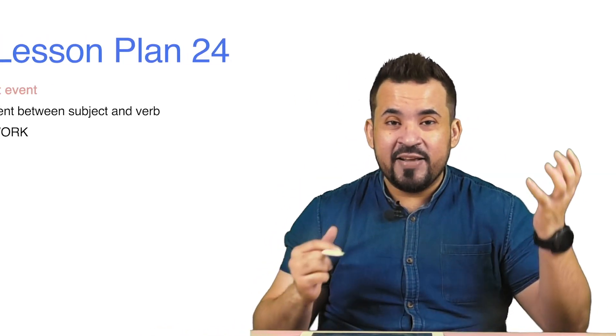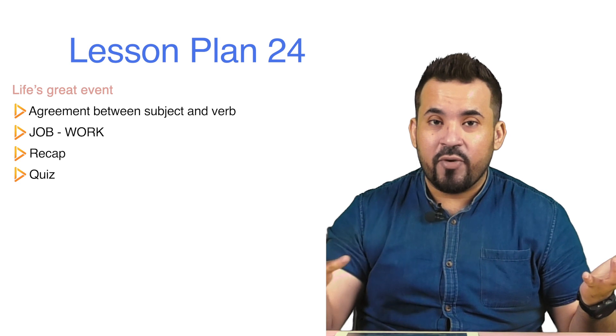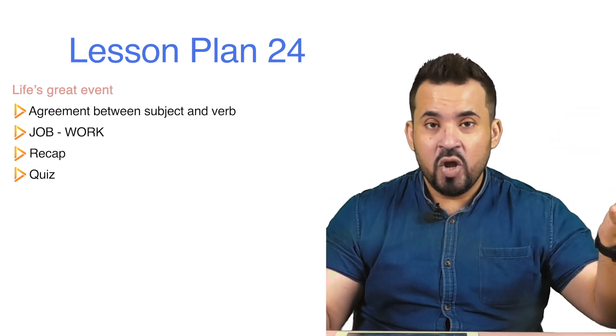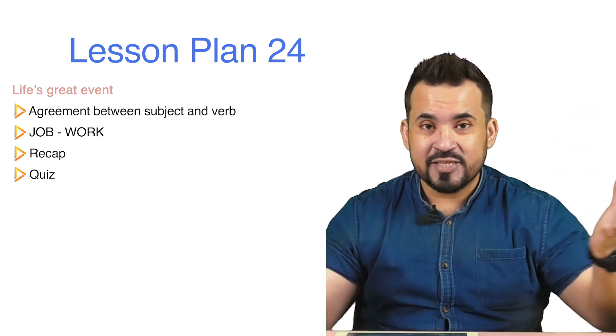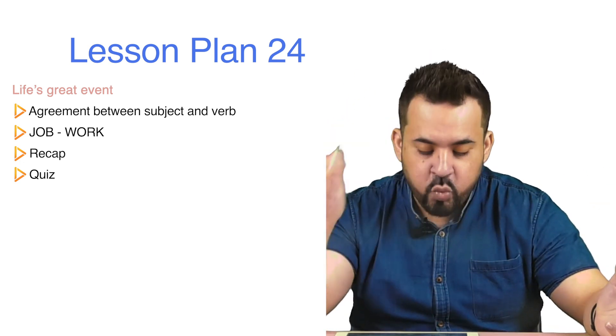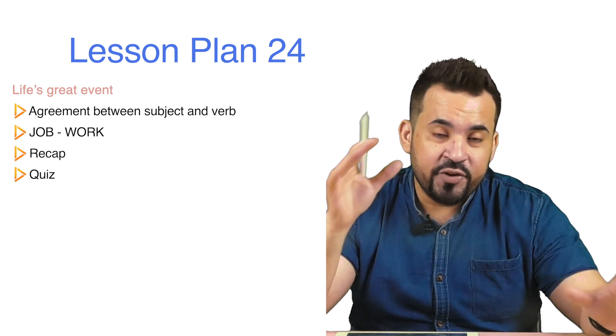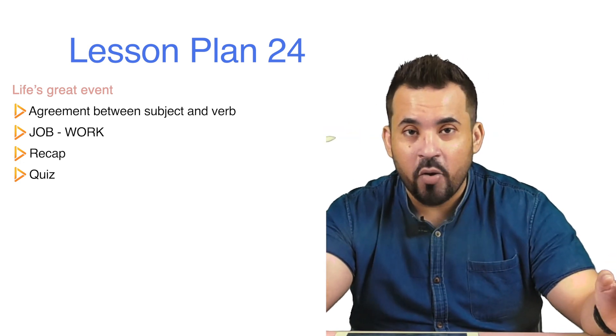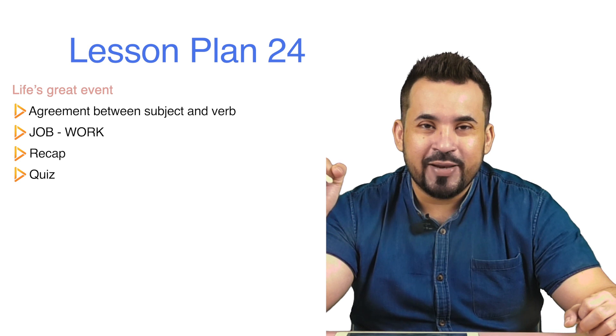Welcome to lesson 24. Today we will talk about something very crucial in grammar: subject and verb agreement, and how the verb must agree with the subject. After that, we will take a look at 'work' and 'job,' the difference between both, and expressions using both. So without further ado, let's get to it.